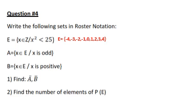Now, set A, where the elements belongs to E, so E is the universal set, such that X is odd. So A could be minus 3, minus 1, 1, and 3. Now B also belongs to E, but it's positive. So only the positive numbers, 1, 2, 3, 4.